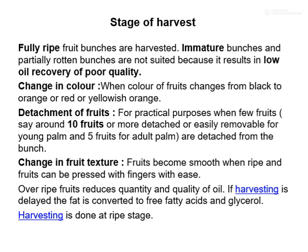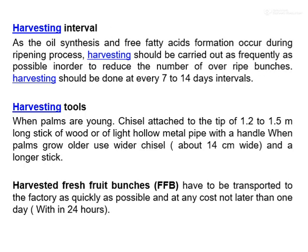Fruit texture change: ripe fruit can be pressed with fingers easily. Overripe fruits reduce quantity and quality of oil; if harvesting is delayed, fats are converted into free fatty acids and glycerols. Harvesting interval: since oil synthesis and free fatty acid formation occur during ripening, harvesting should be done as frequently as possible — every 7 to 14 days — to reduce the number of overripe bunches.